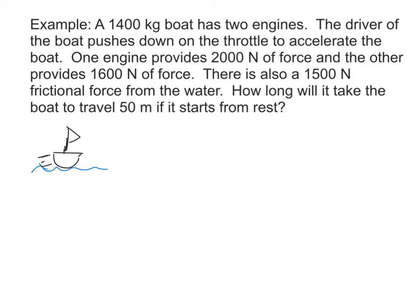Listing what we know. Mass of the boat is 1400 kilograms. It's got two engines. Both of those engines are providing a force. They're both assumingly providing the force in the same direction. So we're going to have a total force from the engines of 3600 newtons. I'm just going to call that F engine.